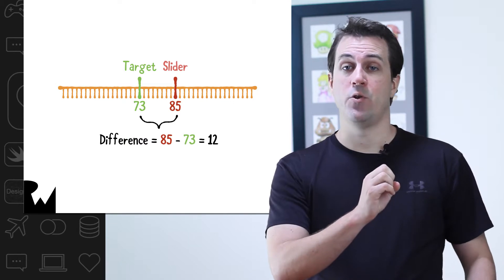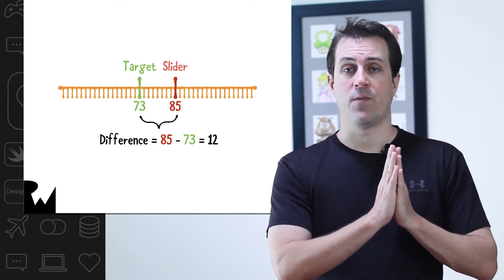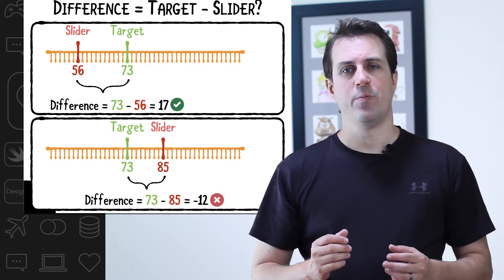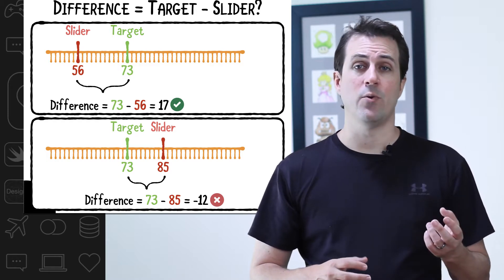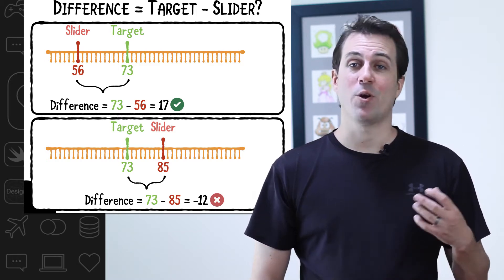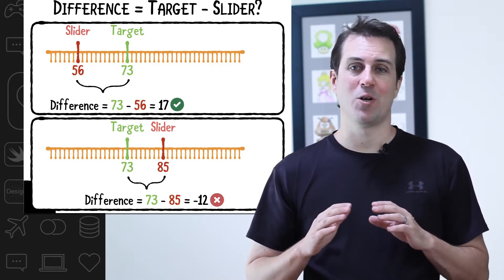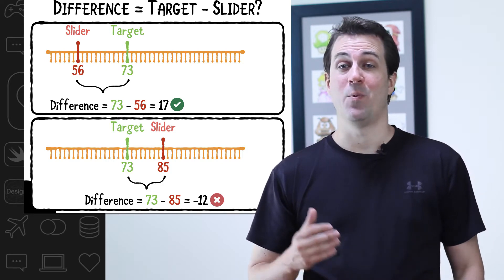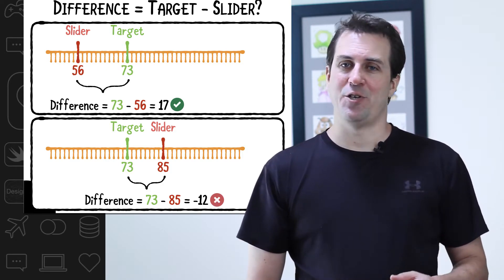In another example, if the slider value is 73 and the user drives the slider to 85, well the difference is 12. A simple approach would be to say the difference is the target value minus the slider's value. That would work great in the first case, but it wouldn't work so well in the second case because the user would end up with a negative number.